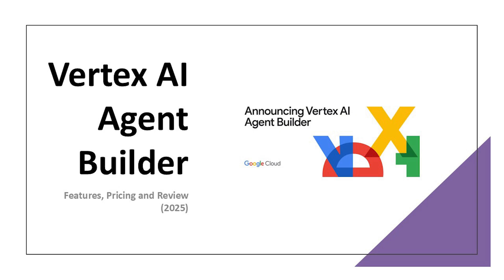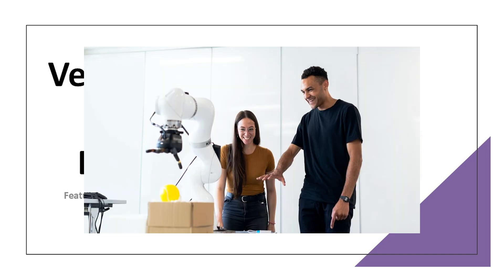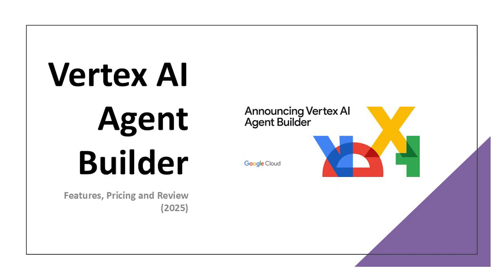Hello everyone, and welcome back to the channel. Now in 2025, Google's Vertex AI Agent Builder is becoming a cornerstone of enterprise automation. It empowers businesses to create custom AI agents that integrate deeply with their operations, from sales and customer service to internal operations and dev workflows. This tool offers a robust solution for building agents tailored to your needs. But what exactly does it offer? How much does it cost? And is it worth using? Let's dive into the features, pricing, and a full review in this video.